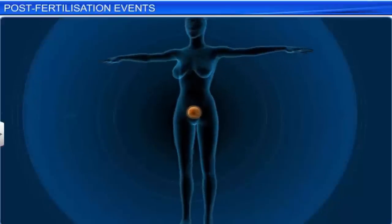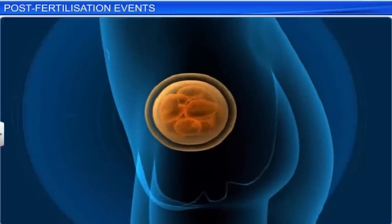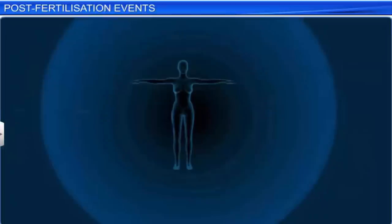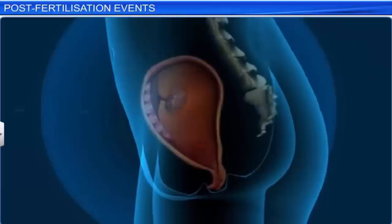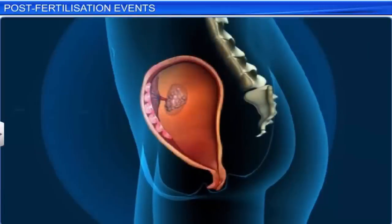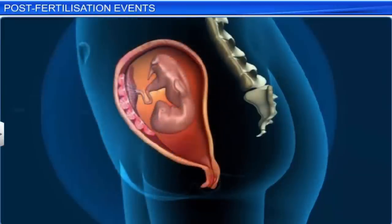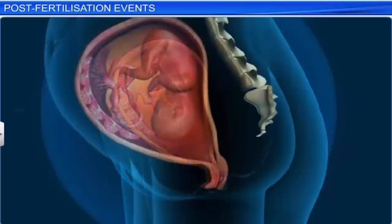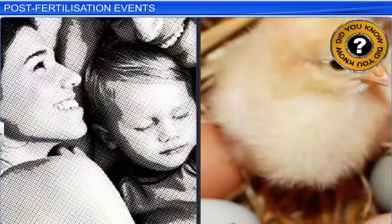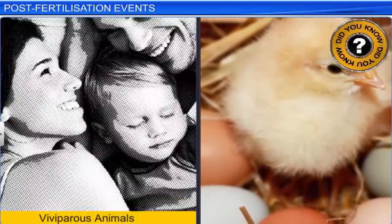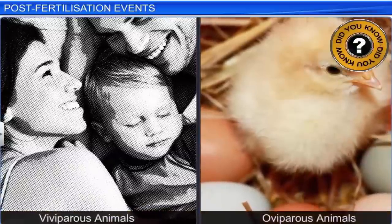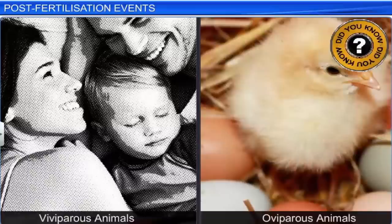In the case of viviparous animals, such as mammals, the process of embryogenesis occurs inside the body of the female. The embryo derives all its nourishment from its mother and begins to develop into a young one. After attaining a certain stage of growth, the young one is ready to emerge from the body of the female. The young ones of viviparous animals have a better chance of survival than those of oviparous animals, as the body of a female offers better nutrition and protection than an eggshell.